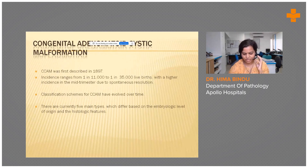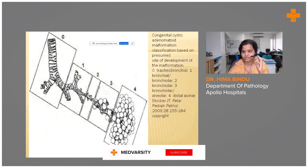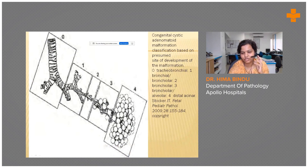The classification scheme of CCAM has evolved over time based on the site of development. It is currently divided into 5 types, from 0 to 4: Type 0 is from the tracheobronchi, Type 1 from bronchi and bronchioles, Type 2 is bronchiolar, Type 3 from bronchioles and alveoli, and Type 4 from the distal acina.